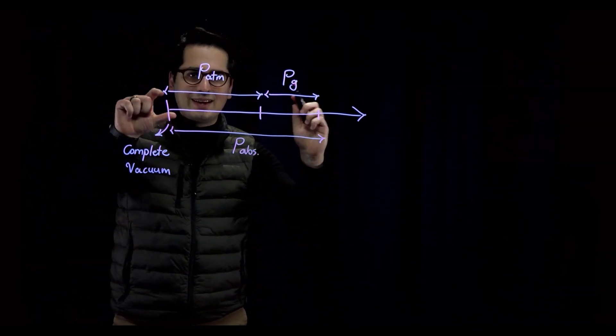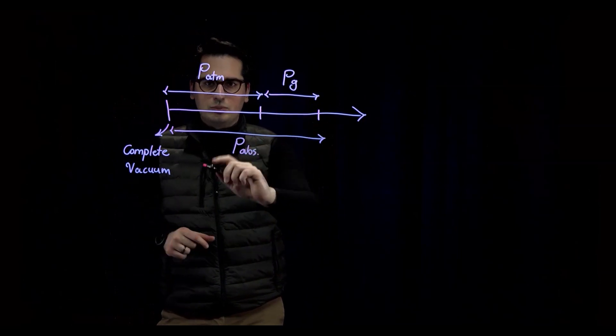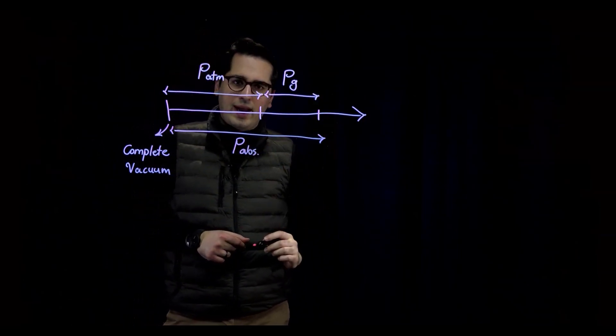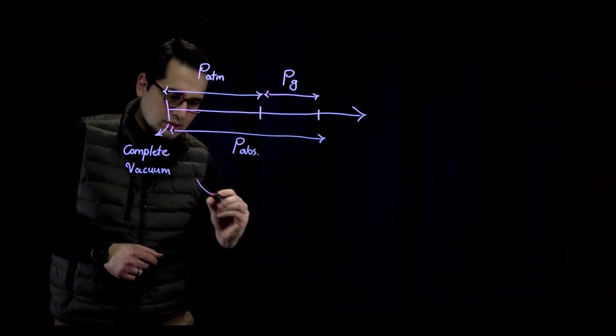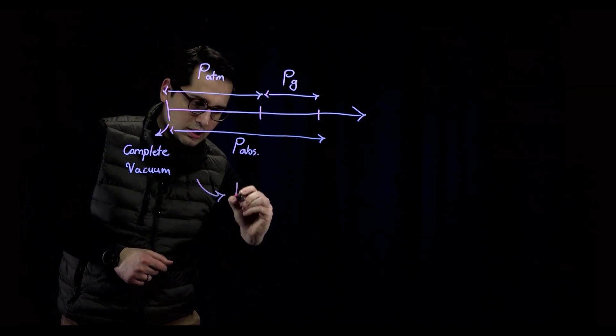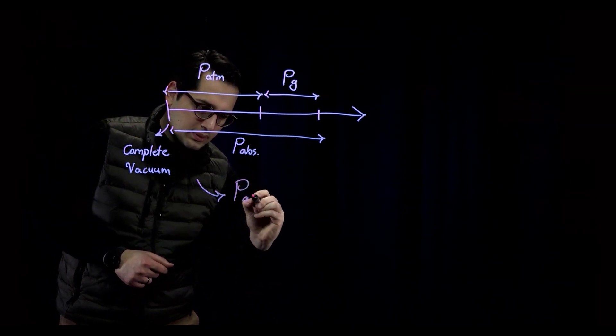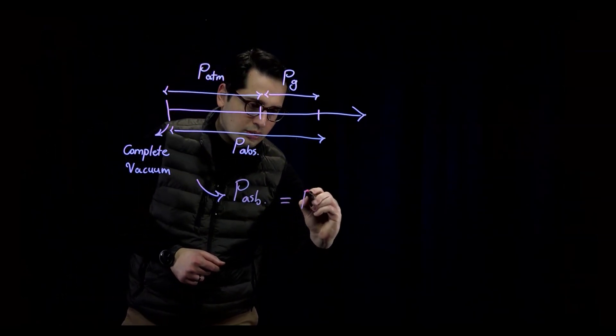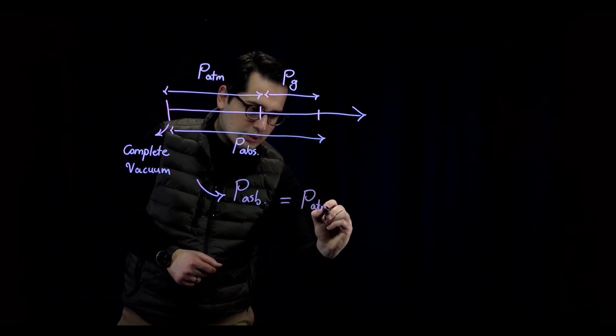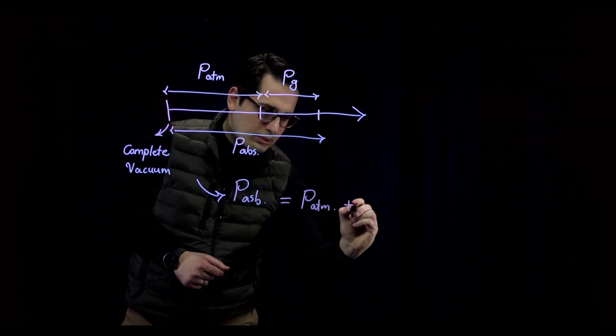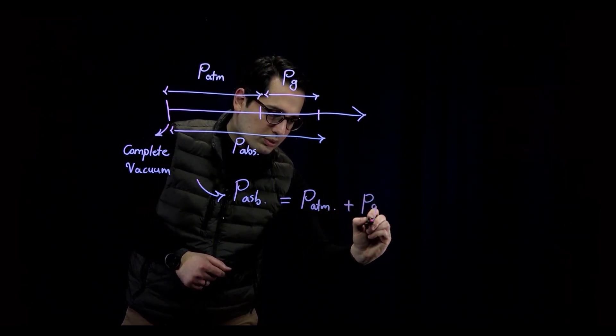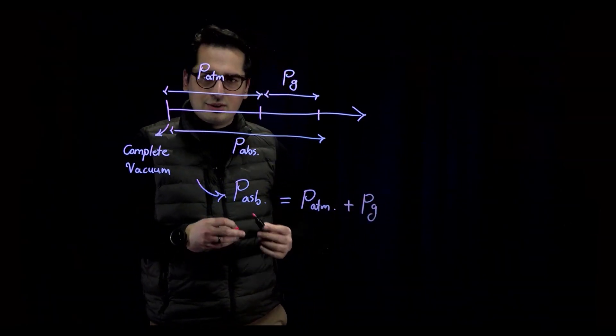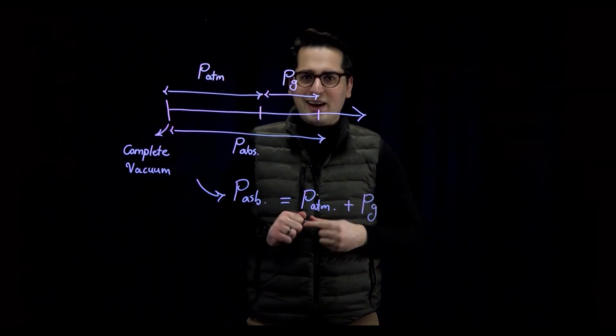Now, we want to write the relationship between absolute pressure, atmospheric pressure, and gauge pressure. Obviously, from this scale over here, you can tell that absolute pressure is equal to atmospheric pressure plus gauge pressure. And this is the relationship between gauge pressure and absolute pressure.